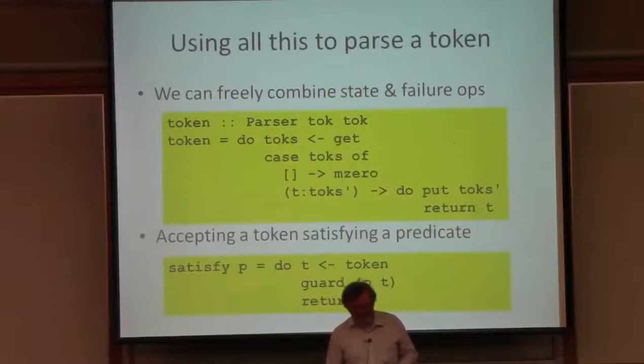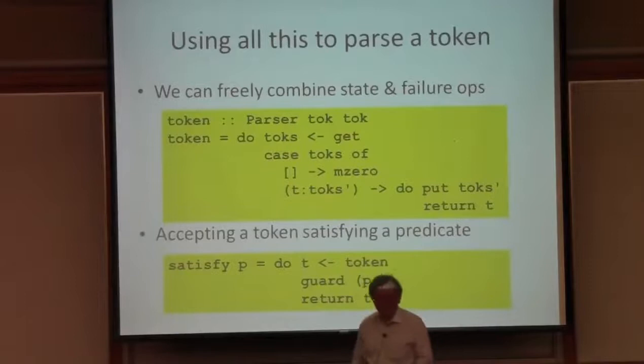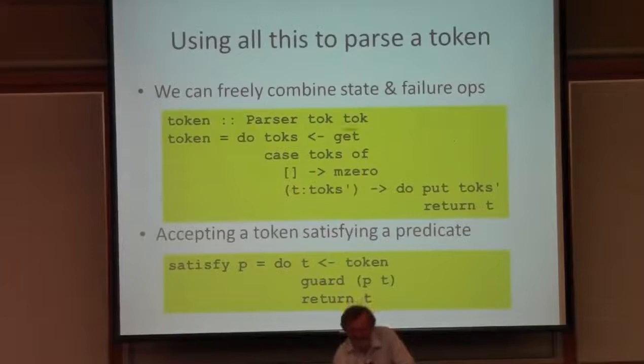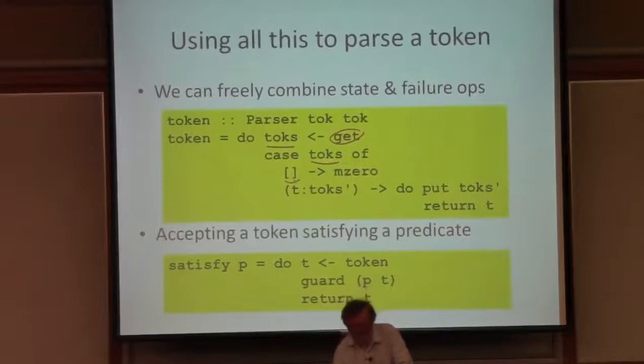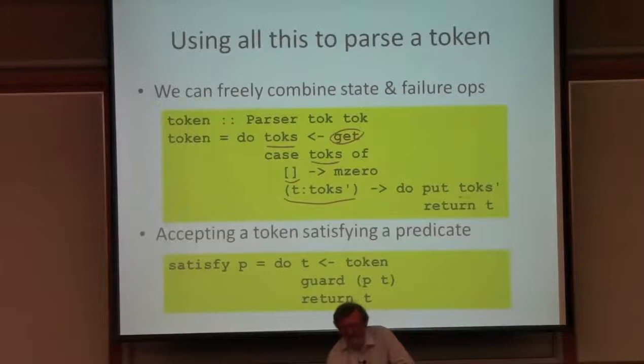Here, for example, is a function for parsing one token. The input is a list of tokens, and it's in the state. So let me just get the input — it's a list of tokens. If there is no token in the input, then parsing should fail, so I can just use M0 to represent that. If I find a token and the rest of the input, toks prime, then I need to consume the token by updating the input, and then I can just return the token that I parsed.